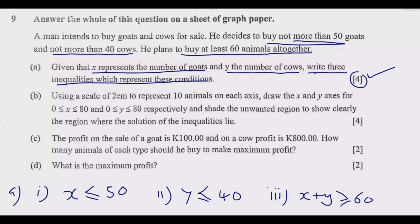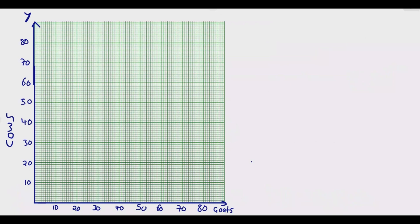Then we move to question B. Using a scale of two centimeters to represent 10 animals on each axis, draw the x and y axes for this interval respectively, and shade the unwanted region to show clearly the region where the solution of the inequalities lie. So what we need to do is take note of the instructions. Two centimeters representing 10 animals. So let us go to the graph paper and transfer this information.